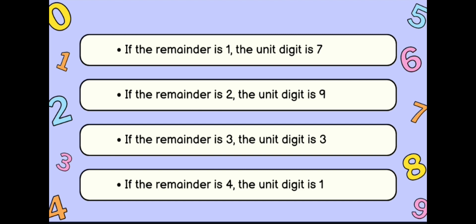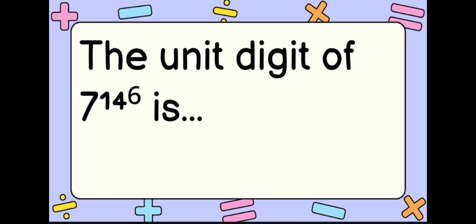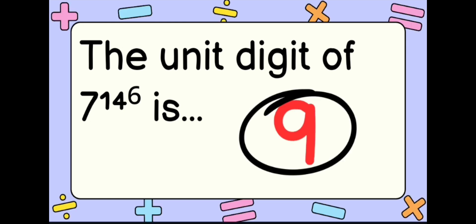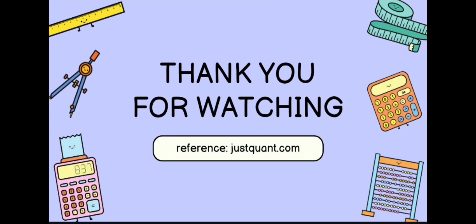So which one of these is our answer? Our remainder is 2, therefore the unit digit of 7 raised to 146 is 9! And that is all for determining the unit's digit. Thank you for watching!